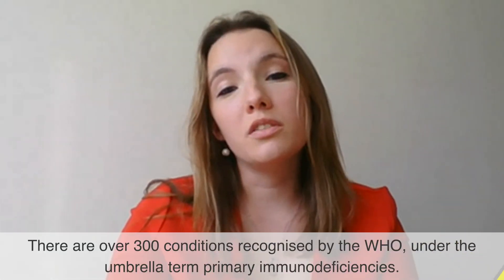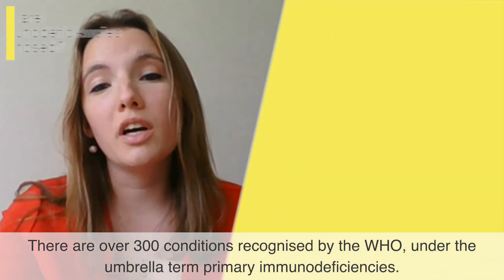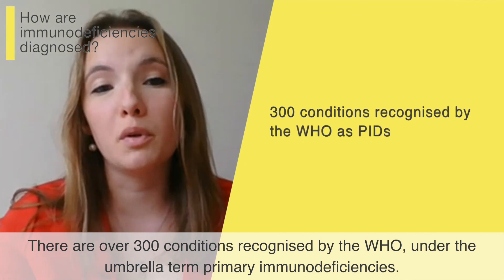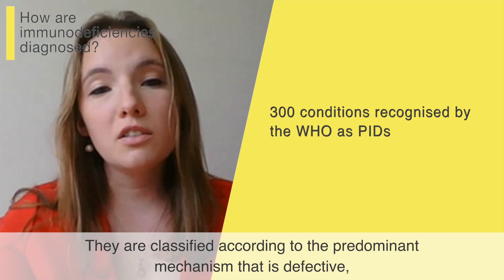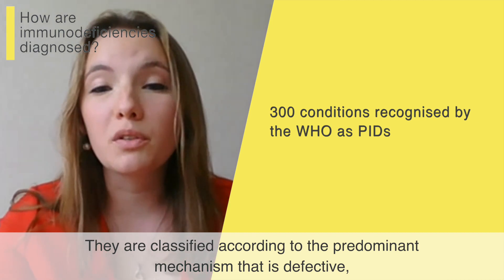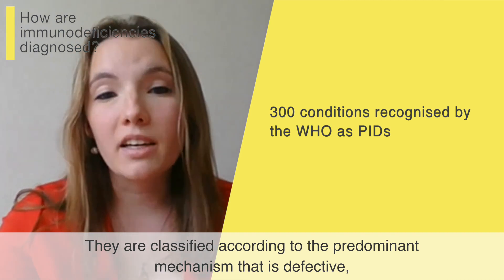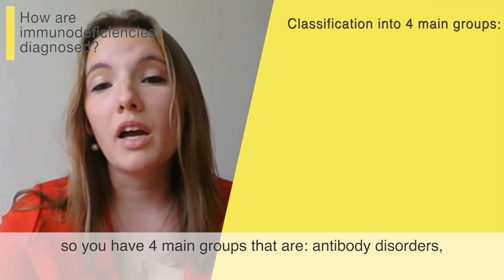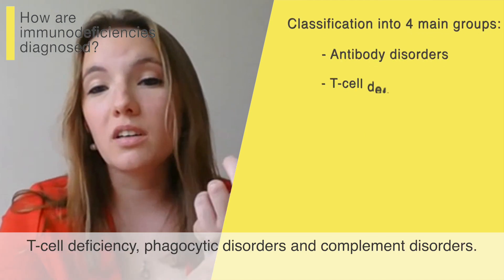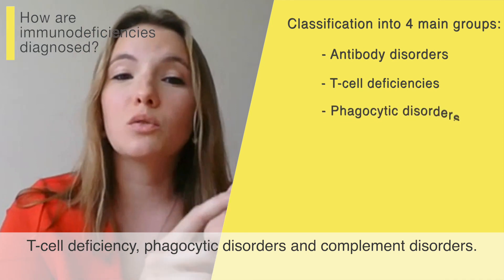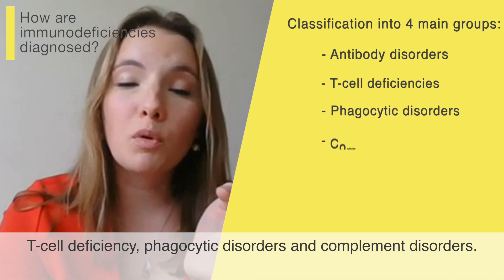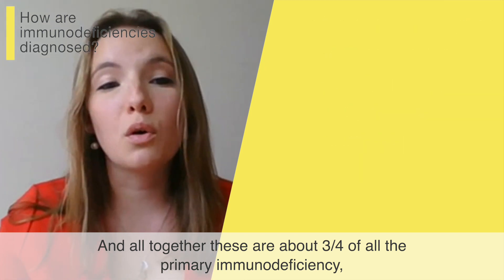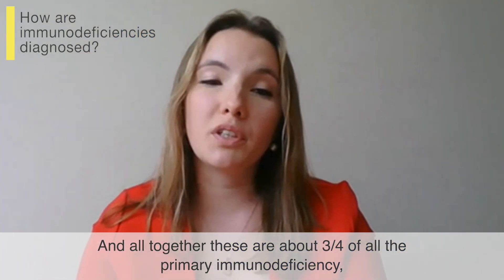There are over 300 conditions recognized by the WHO under the umbrella term primary immunodeficiencies. They are classified according to the predominant mechanism that is defective. There are four main groups: antibody disorders, T-cell deficiency, phagocytic disorders, and complement disorders. Together, these account for about three quarters of all primary immunodeficiencies.